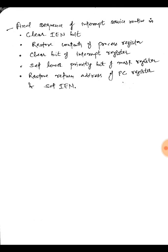The final sequence of the interrupt service routine is: clear IEN to 0, restore the contents of processor registers, clear the bit of the interrupt register, set lower priority bits of the mask register, restore the return address in the PC register, and set IEN to 1. This concludes the process for the interrupt service routine sequence. Thank you.